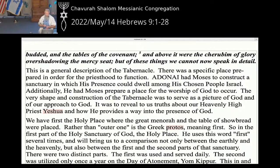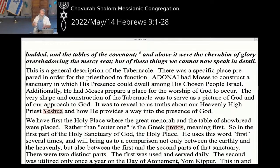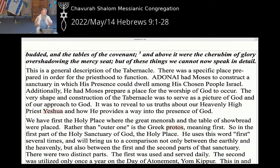A general description of the tabernacle — a specific place — was necessary in order for the priesthood to function. They didn't function by just going out in the woods and deciding to slaughter an animal; they had a specific way of doing this. Adonai had Moses construct a sanctuary in which his presence could dwell among his chosen people Israel. He was already with them when they left Egypt, and he said: I want you to build me a place so that my presence will be there, so they can come and get to know me. Additionally, he had Moses prepare a place for the worship of God to occur. The very shape and construction of the tabernacle was to serve as a picture of God and of our approach to God.